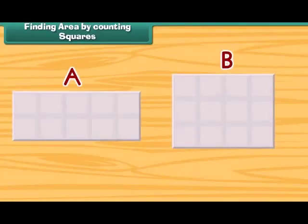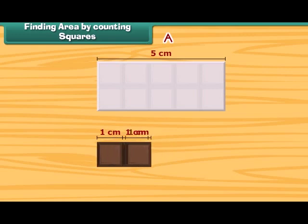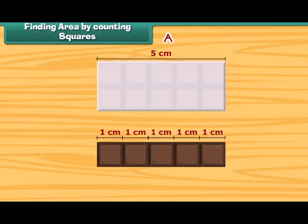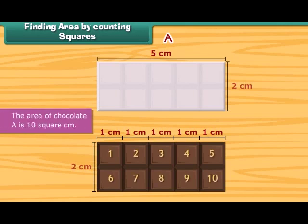Friends, we have these two chocolates. Let us find out which one is bigger and which one is smaller. We will take the help of one square piece of chocolate of side one centimeter. The length of chocolate A is five centimeters, so five squares can be arranged along its length. The width of this chocolate is two centimeters, so two squares can be arranged along its width. Thus, in total, ten squares can be arranged on it. So, the area of chocolate A is ten square centimeters.